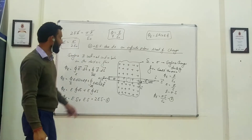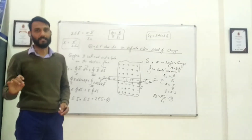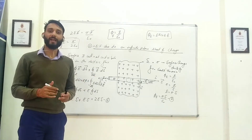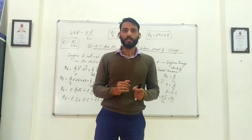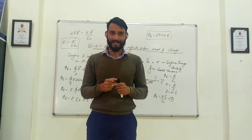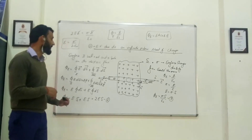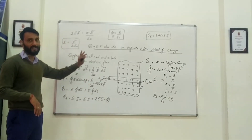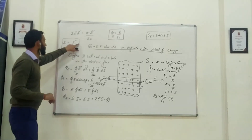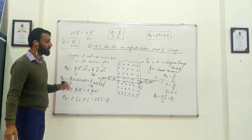This is the electric field due to an infinite plane sheet of charge. Now, recall that for a single point charge, E equals 1 upon 4 pi epsilon naught times Q upon R squared. For an electric dipole, E was inversely proportional to R cubed. For an infinitely long straight conductor, E was inversely proportional to R. But now for this plane sheet of charge, it does not depend on R at all — it just depends on sigma, the surface charge density. So as we move ahead, we are getting quite interesting results.